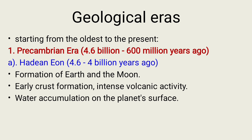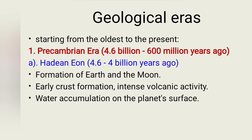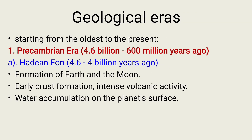This one is known from 4.6 up to 4 billion years ago. What were the major events that took place in this eon? One: formation of Earth and the Moon. Two: early crust formation and intense volcanic activities. Three: water accumulation on the planet's surface.